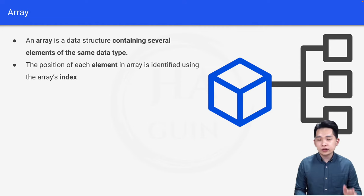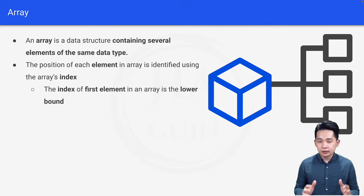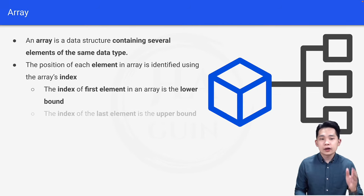The position of each element in an array is identified using the array's index. For those of you who don't know what index is in this context, take index as the pointer or the location. The index of first element in an array is the lower bound and the index of the last element is the upper bound.